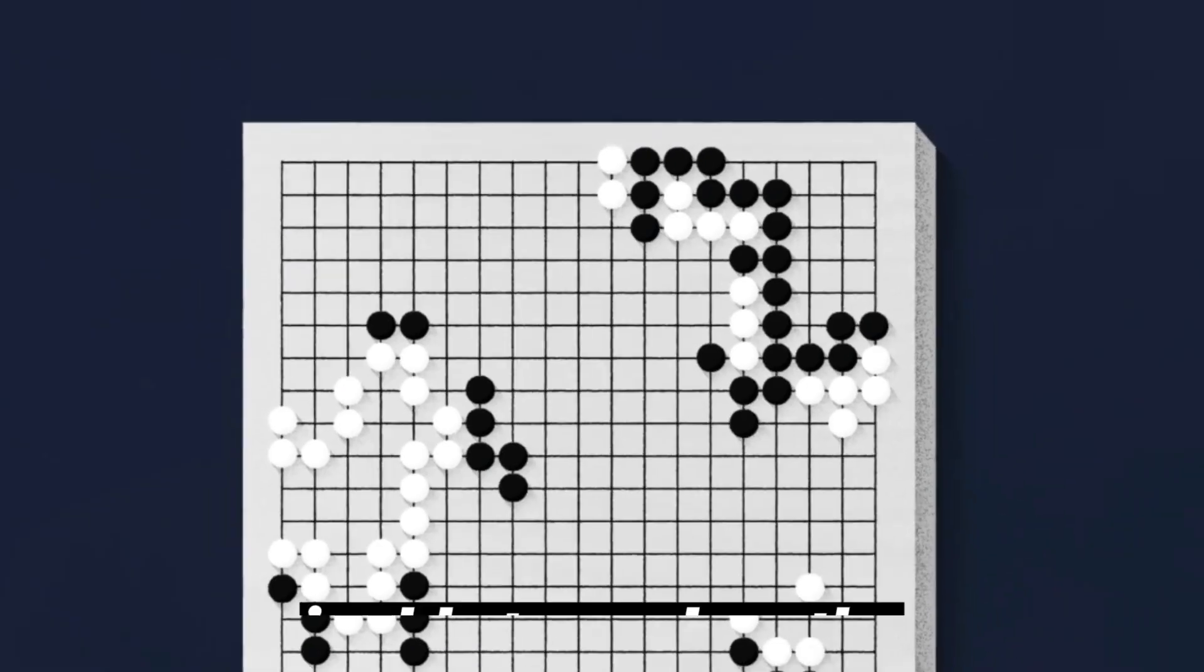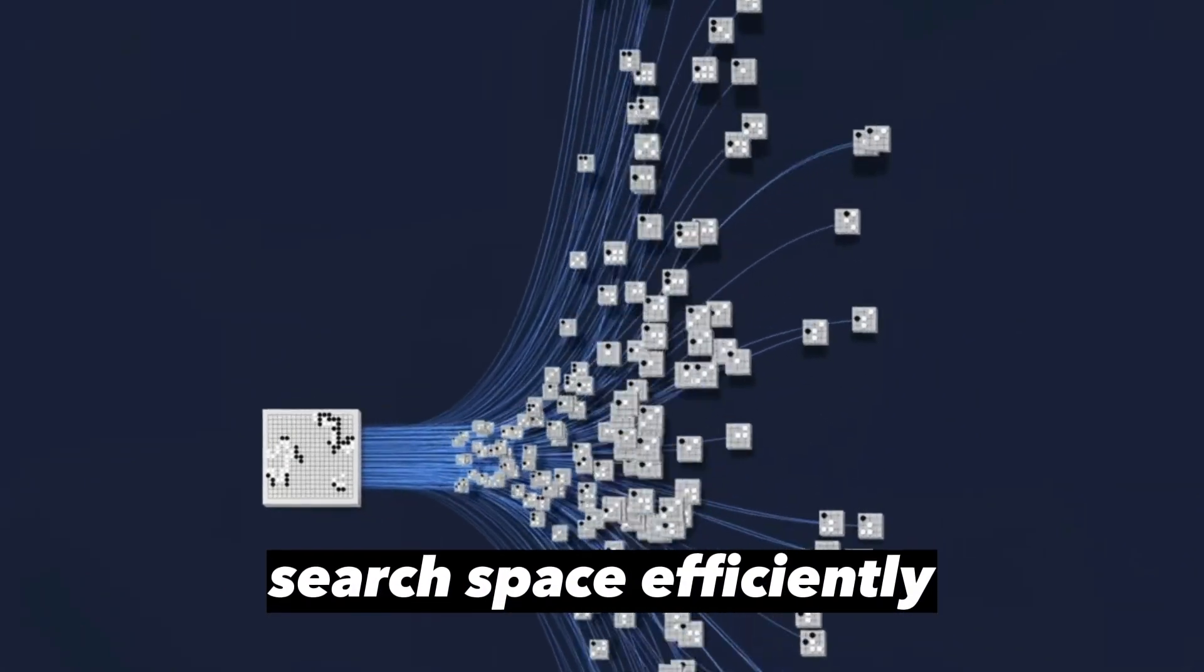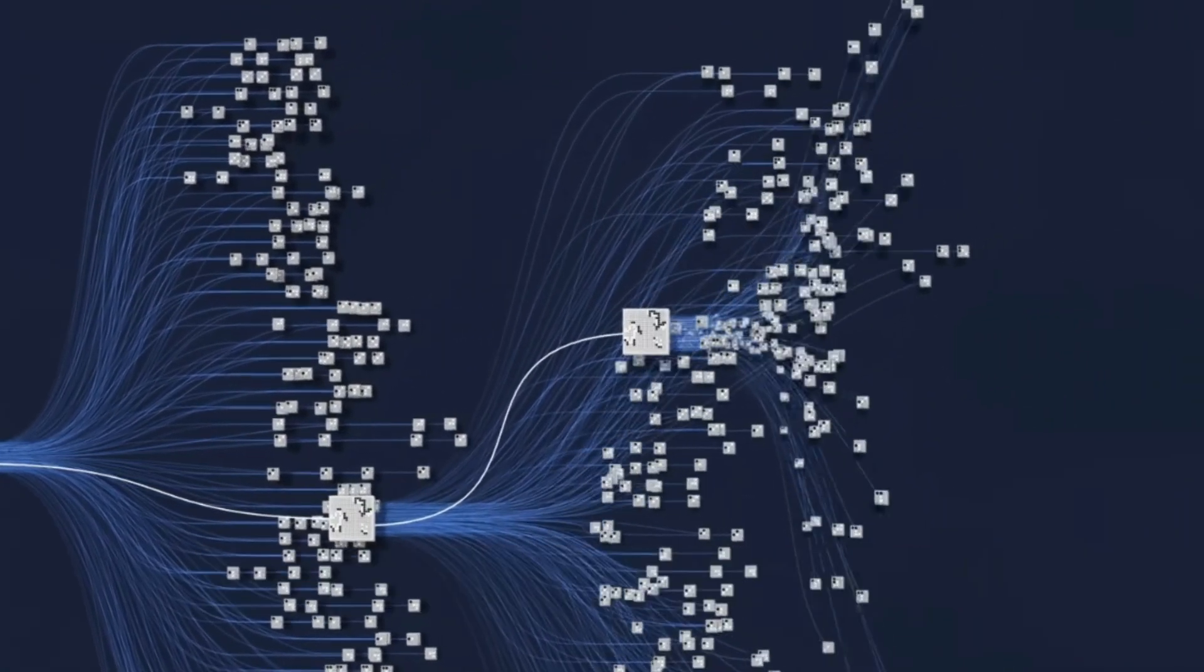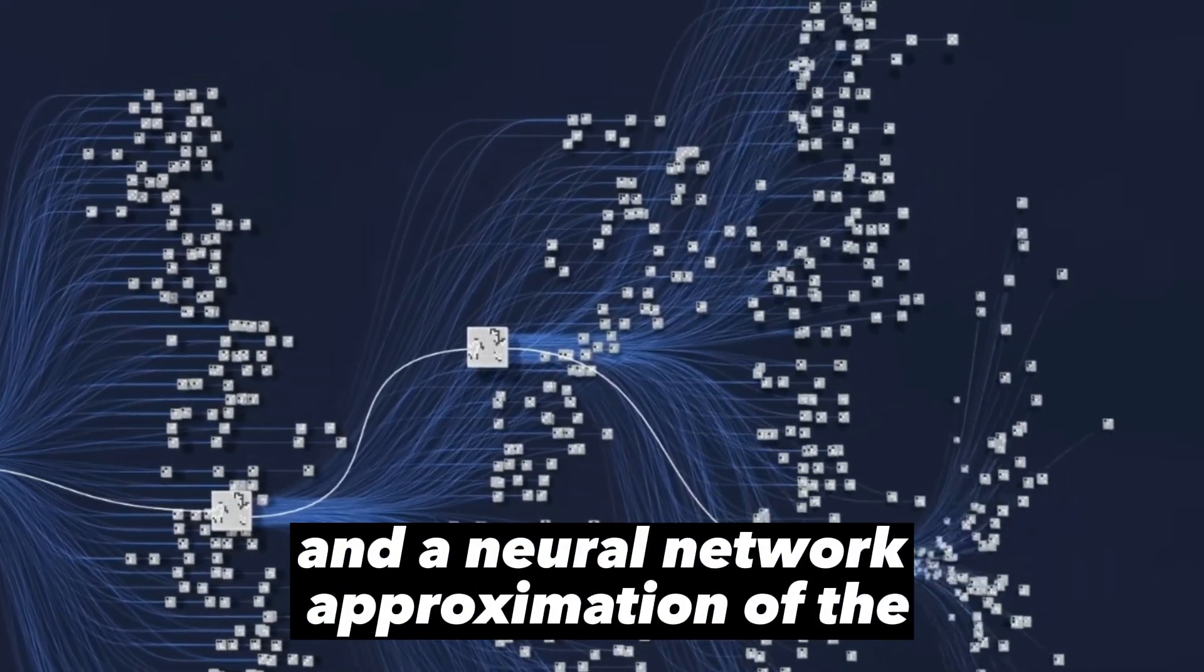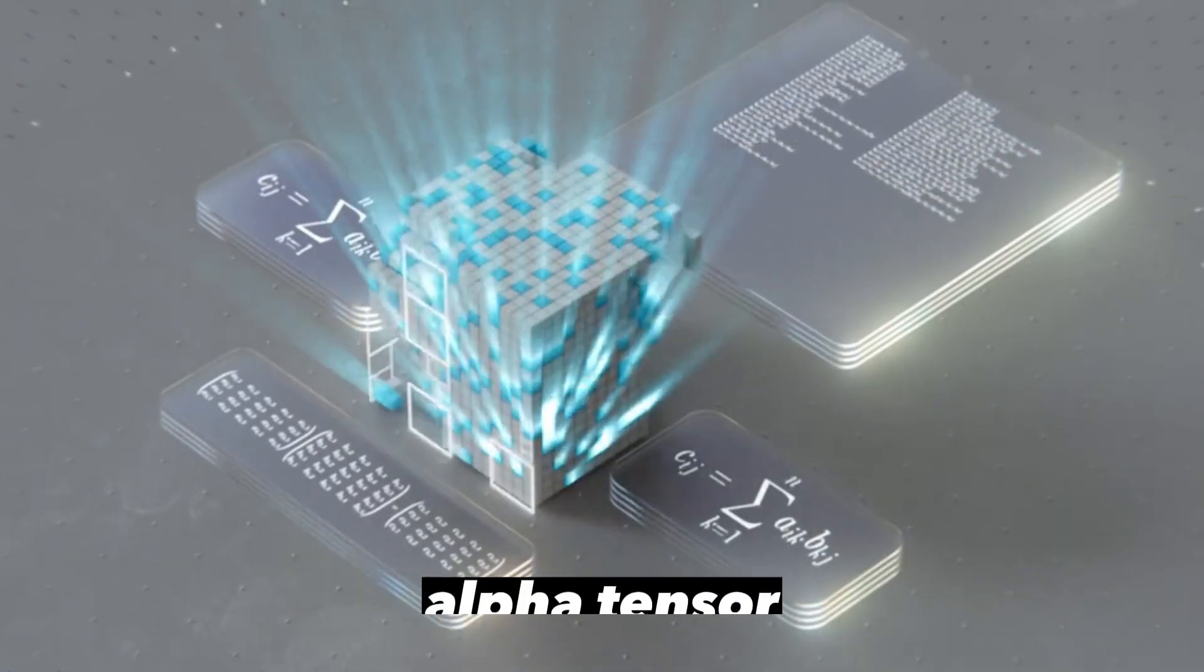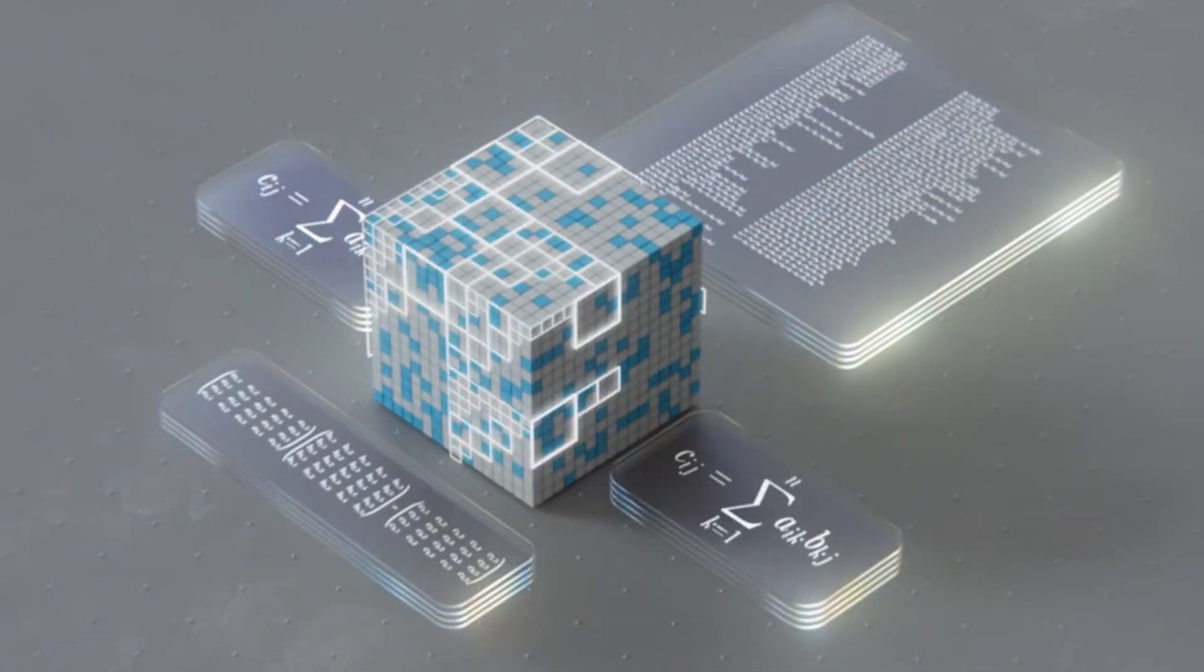AlphaTensor is able to explore the search space efficiently and to find solutions using Monte Carlo tree search and a neural network approximation of the value of the states. If you would like to see how AlphaTensor agent works, leave a like and comment.